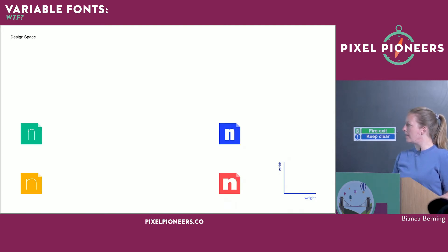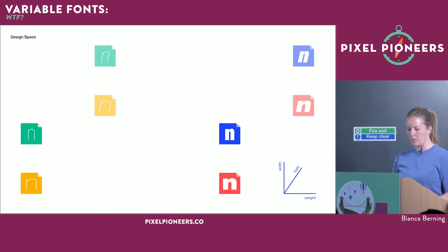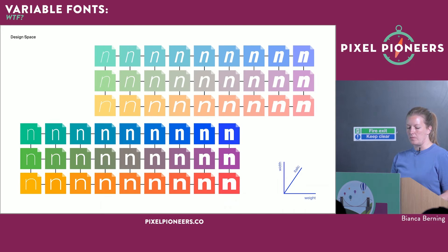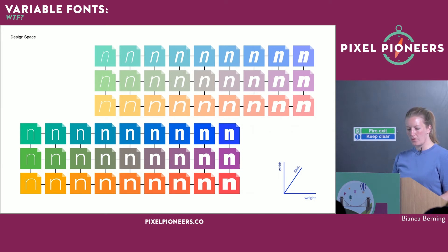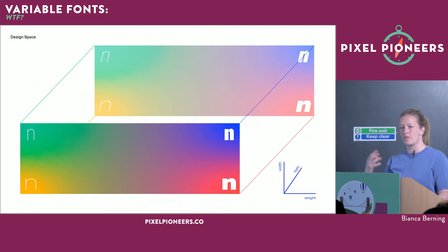My extremes within the design space are condensed hairline, condensed black, extended hairline, and extended black, plus italics. If I wanted to serve all of this as static fonts, I might end up with 54 different font files — though nobody would ever do or need that many. With variable fonts, you can do exactly that with no performance implications, because you're just serving one font file and can use any instance within that design space.